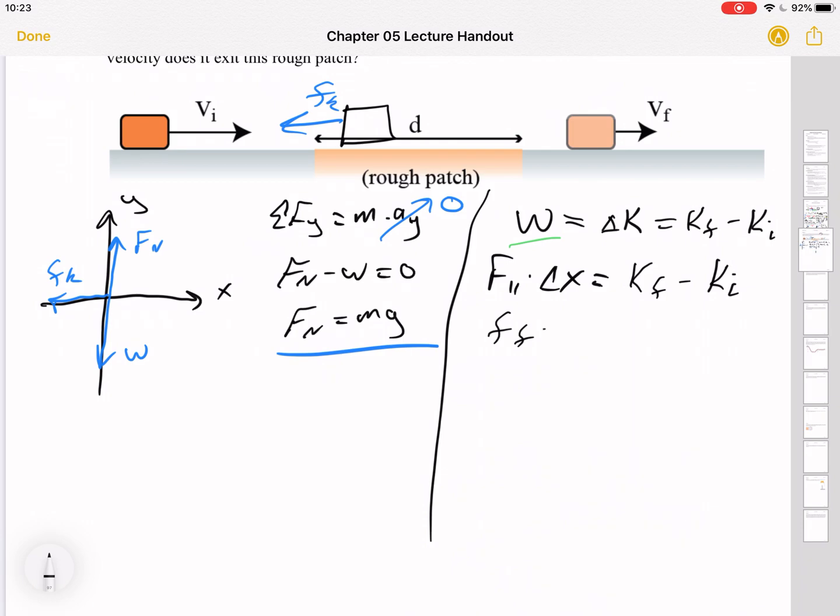Frictional force times delta x equals half m v final squared minus half m v initial squared. I'm solving for v final. I know v initial. I know delta x. But I need the kinetic friction. And that's where this normal force is going to come in.